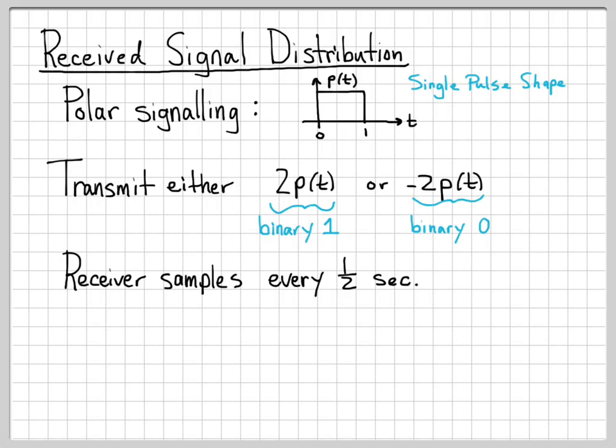How is our receiver going to get this information? The job of the receiver is to get back to bits of the original message that was transmitted. The receiver is going to sample every one-half second. One-half second is right in the middle of our pulse shape P of T, since P of T goes from 0 to 1. When our receiver samples a value of 2, it knows that a binary 1 must have been sent, because the only way to get a positive value of 2 when sampling is if 2P(T) was transmitted.